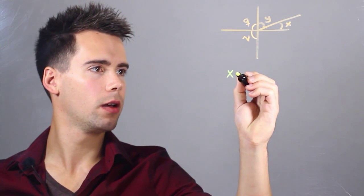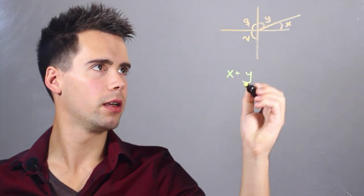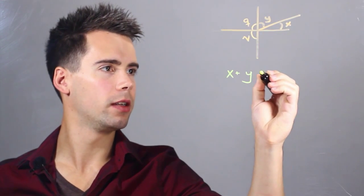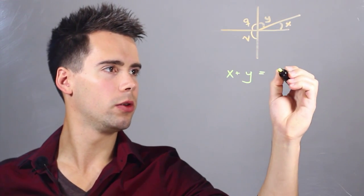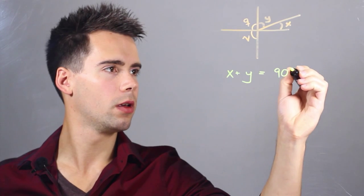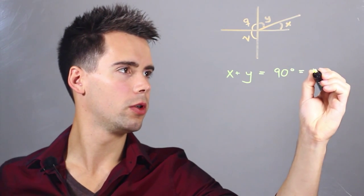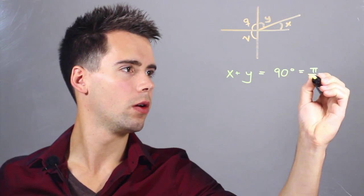So we can write that x plus y is a complementary angle and it's equal to 90 degrees, which is equal to pi over 2.